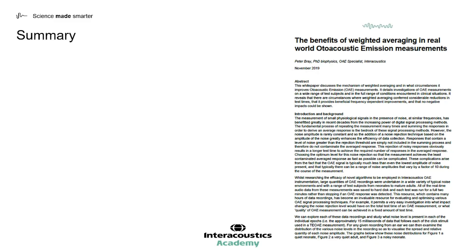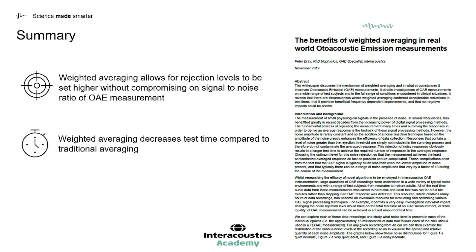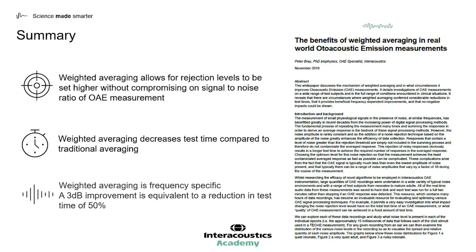In summary, you can find further information regarding this study in a white paper written by Dr. Pete Bray called 'The Benefits of Weighted Averaging in Real World OAE Acoustic Emission Measurements.' Weighted averaging allows rejection levels to be set higher without compromising on signal-to-noise ratio. Weighted averaging decreases test time compared to traditional averaging. And lastly, weighted averaging is frequency specific — remember a 3 dB improvement as seen at 2 kHz is equivalent to a reduction in test time of 50%.